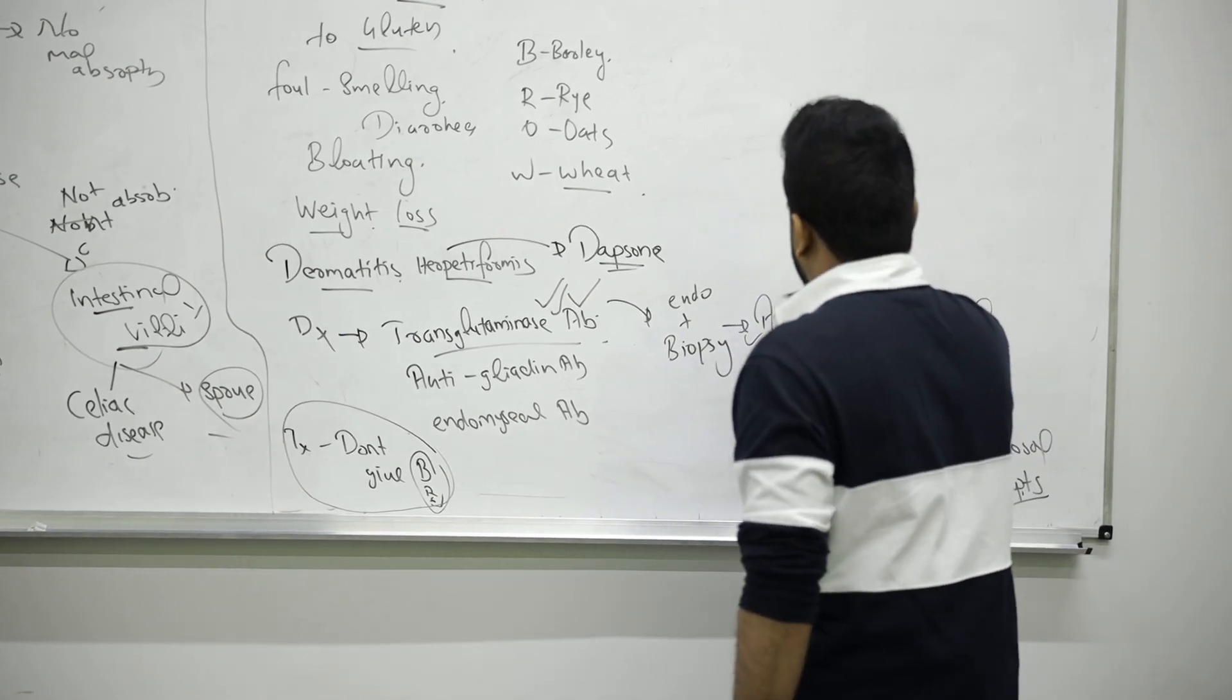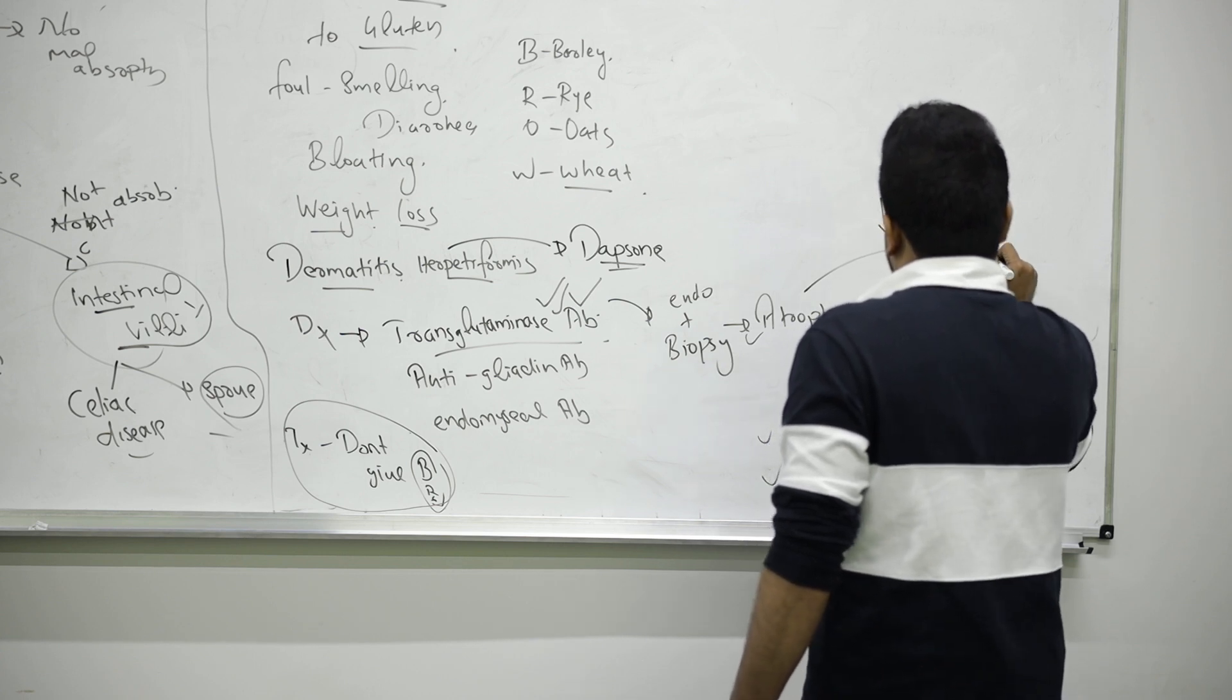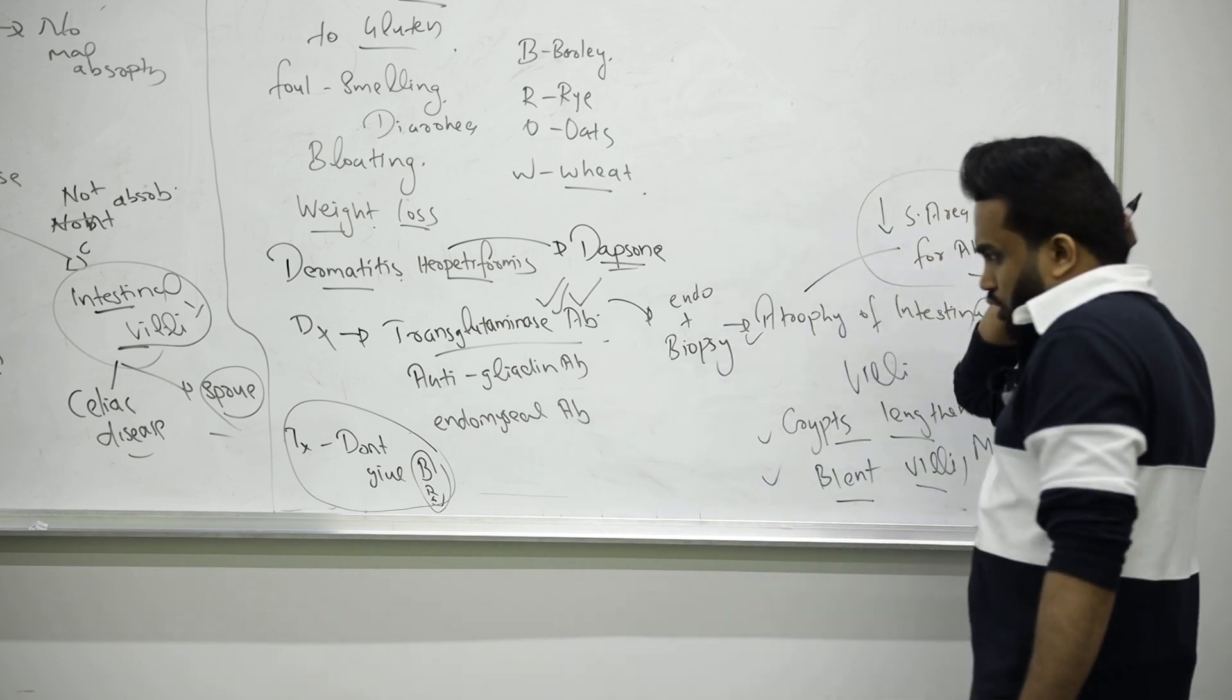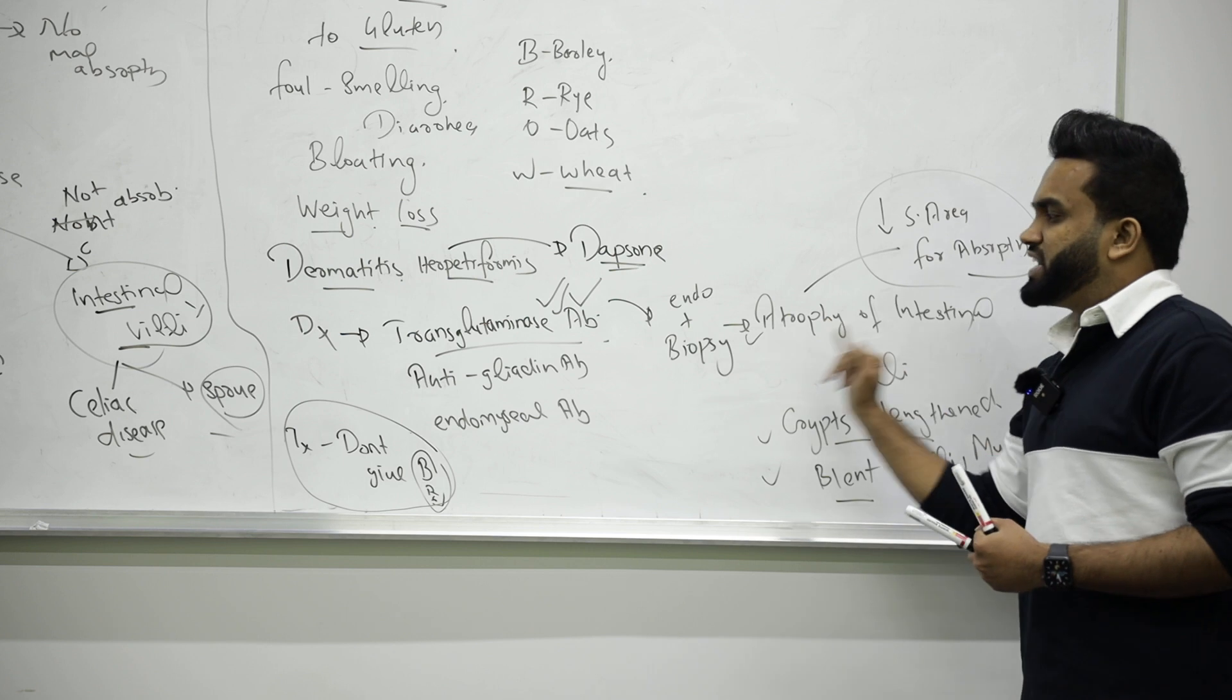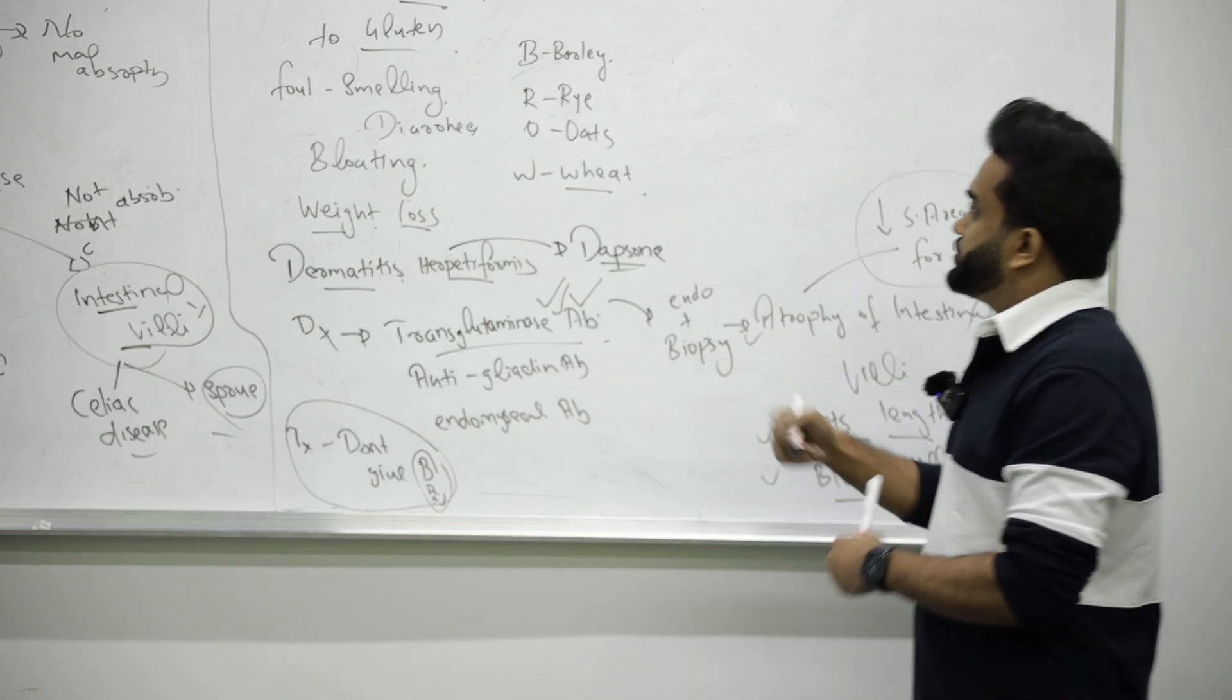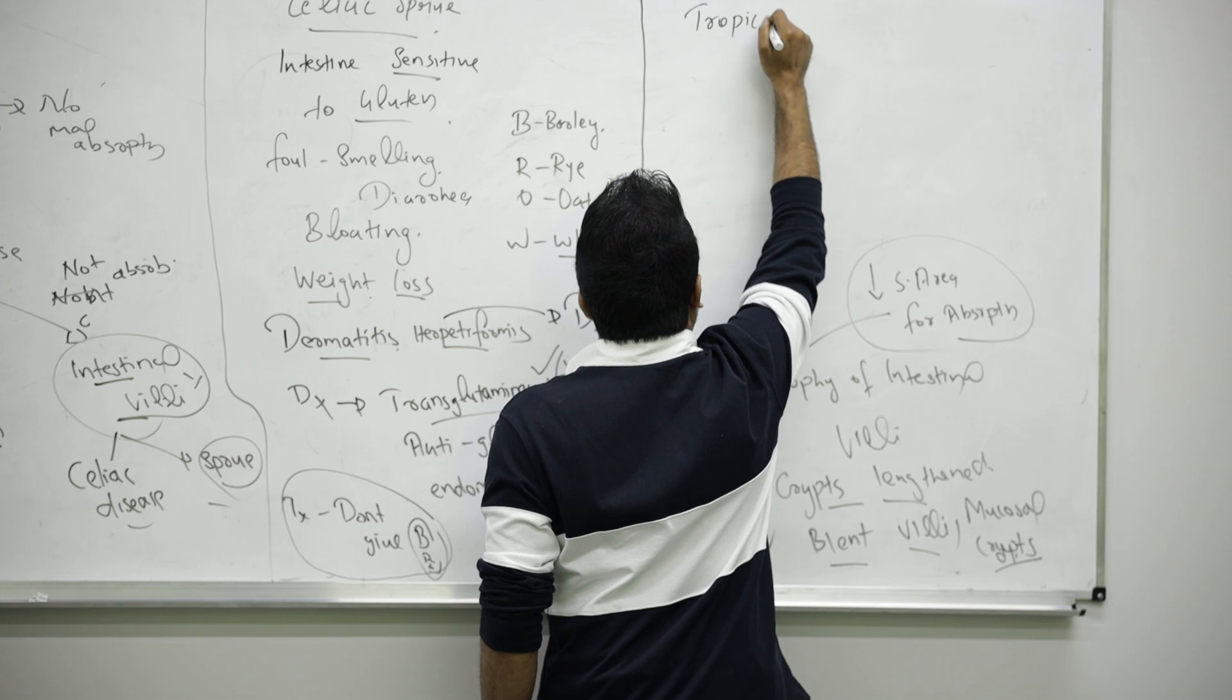So the main thing happening here: decrease in surface area for absorption. Why is it happening? Because of this antibody attacking the intestine. Then lymphocyte infiltration can be also seen here. So that's about celiac sprue.